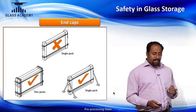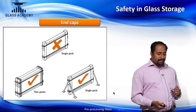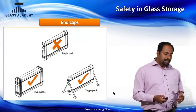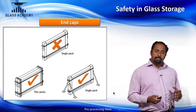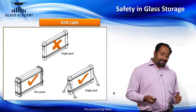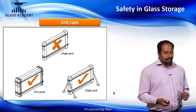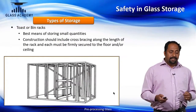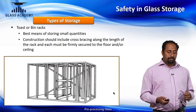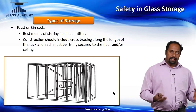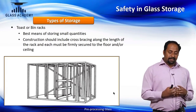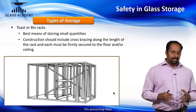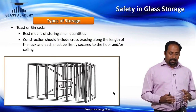As seen in the picture, a single pack is not very stable on its own. When two packs are bundled with a steel strap, they become safer — or a single pack with proper support structures is required. Another common storage type is tossed or bin racks, best suited for storing small quantities. Construction should include cross bracing along the length of the rack, and each rack must be firmly secured to the floor and/or ceiling.